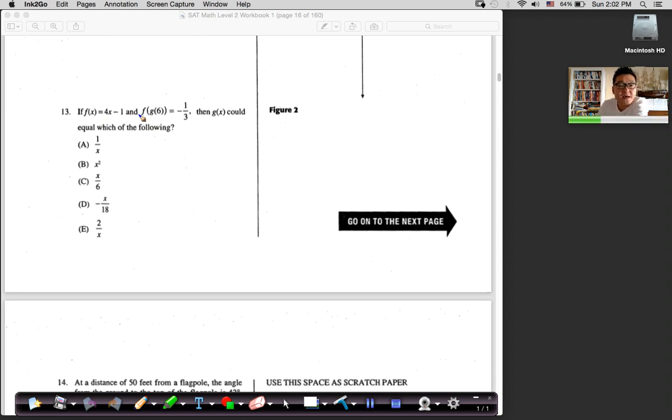Thirteen. If fx is equal to this and f of g of six is equal to that, then g of x could equal to which of the following? A lot of students have, even the smart students have difficulty comprehending this sticking in thing. Like, where do I stick that six into g and then what do I do with that value? Now, you've got to put it in the f, but for some reason, for some students, they get confused with that.